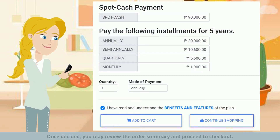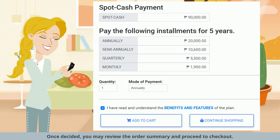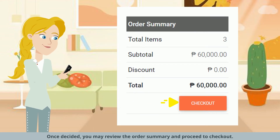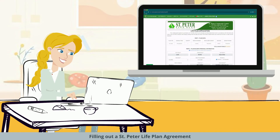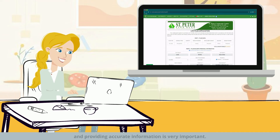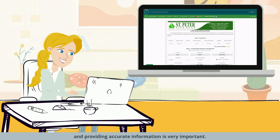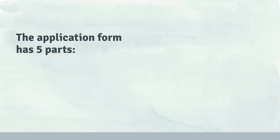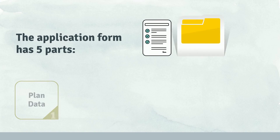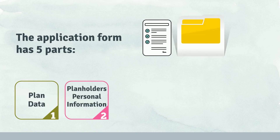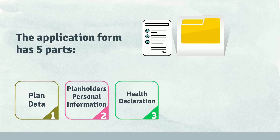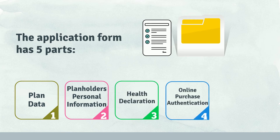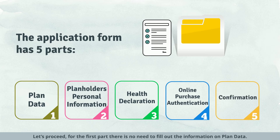Once decided, you may review the order summary and proceed to check out. Filling out a St. Peter Life Plan agreement and providing accurate information is very important. The LPA serves as the contract between you and St. Peter Life Plan. The application form has five parts: plan data, plan holder's personal information, health declaration, online purchase authentication, and confirmation.